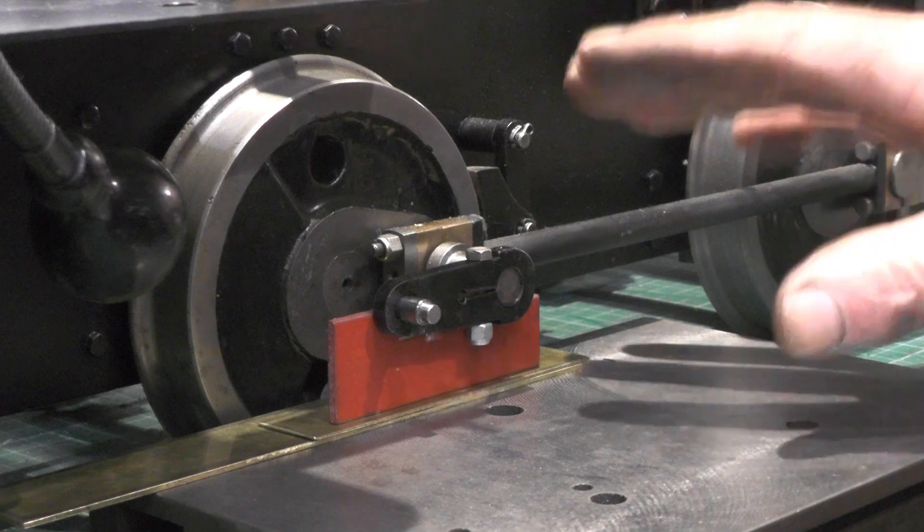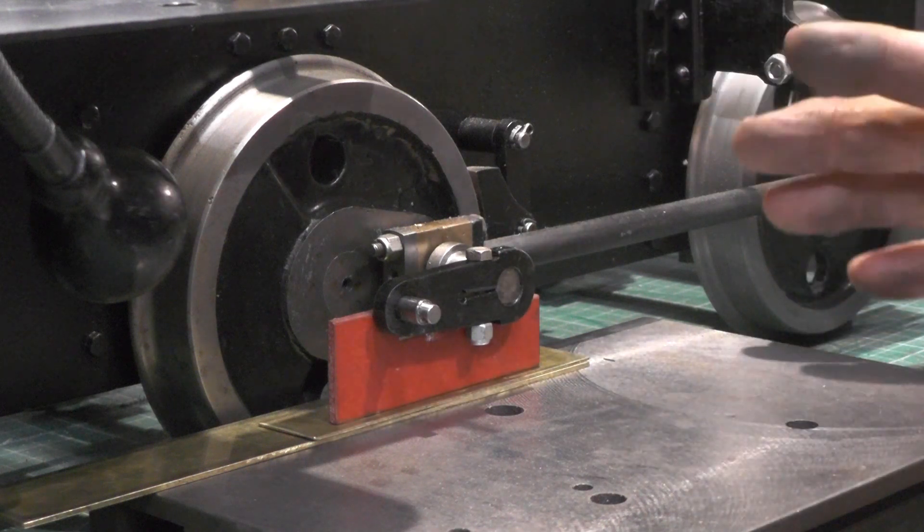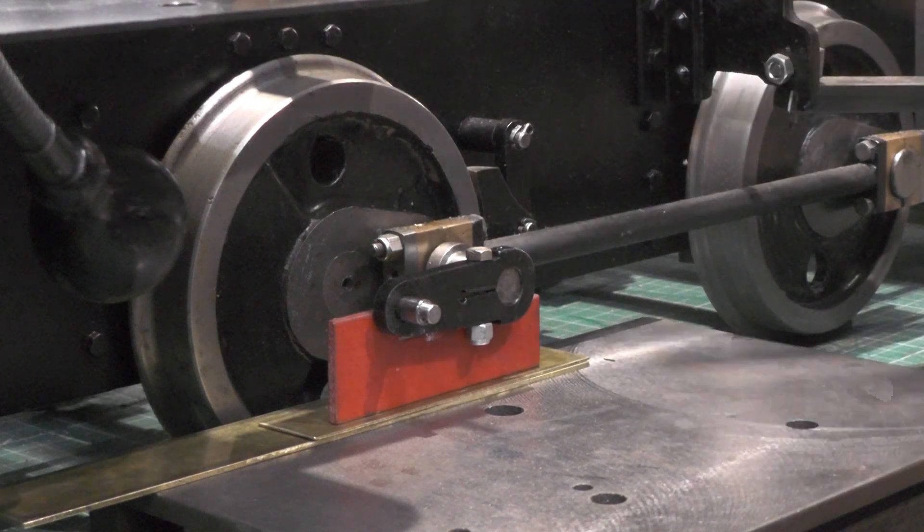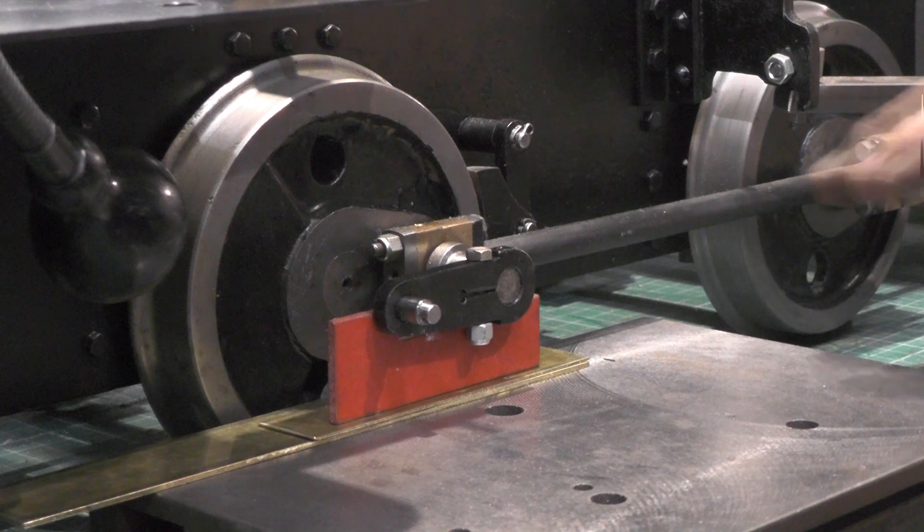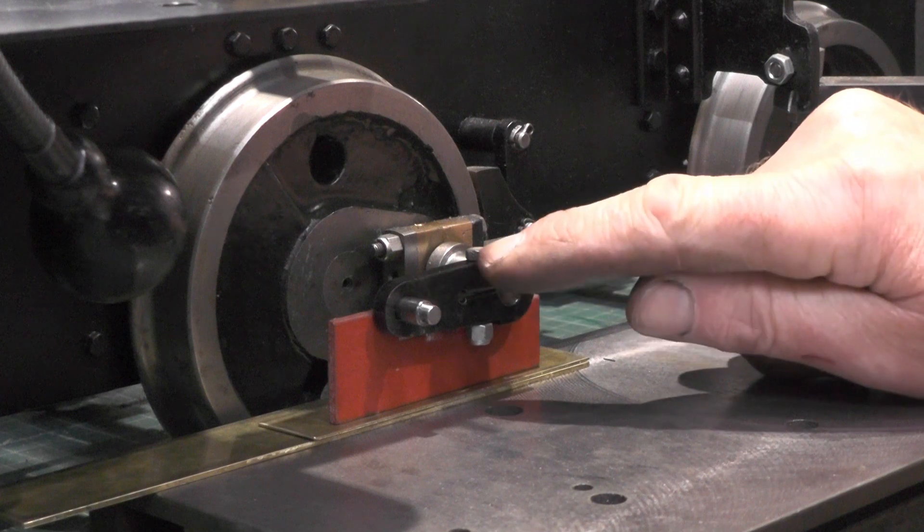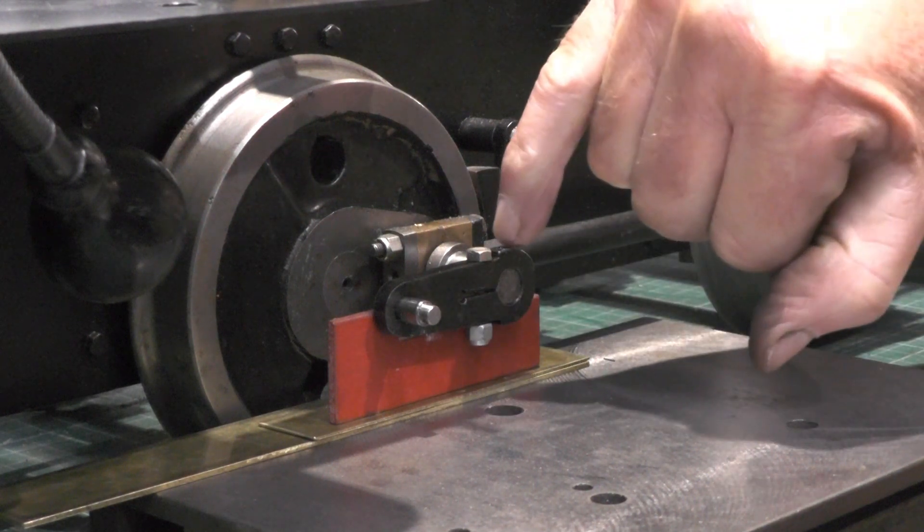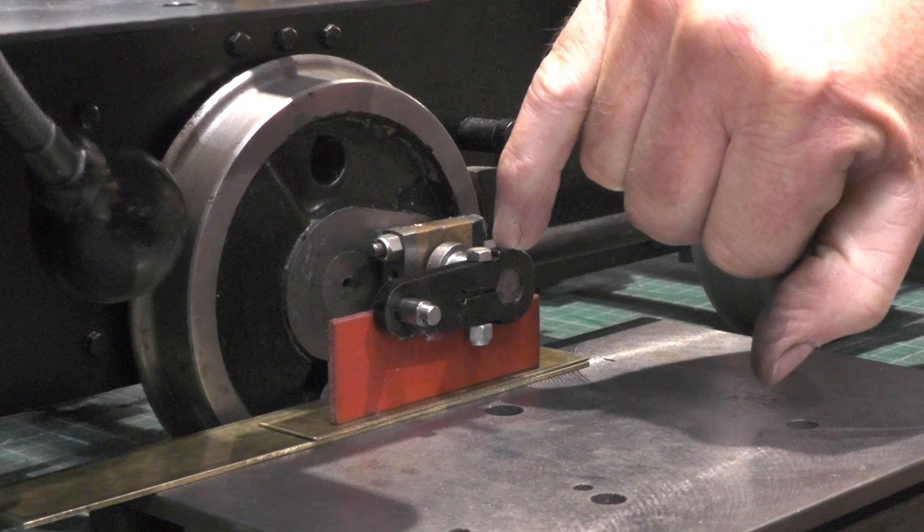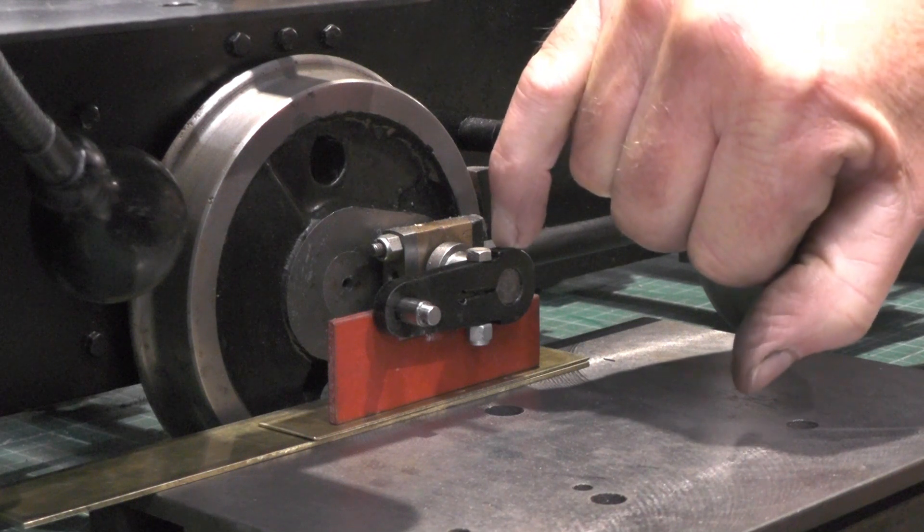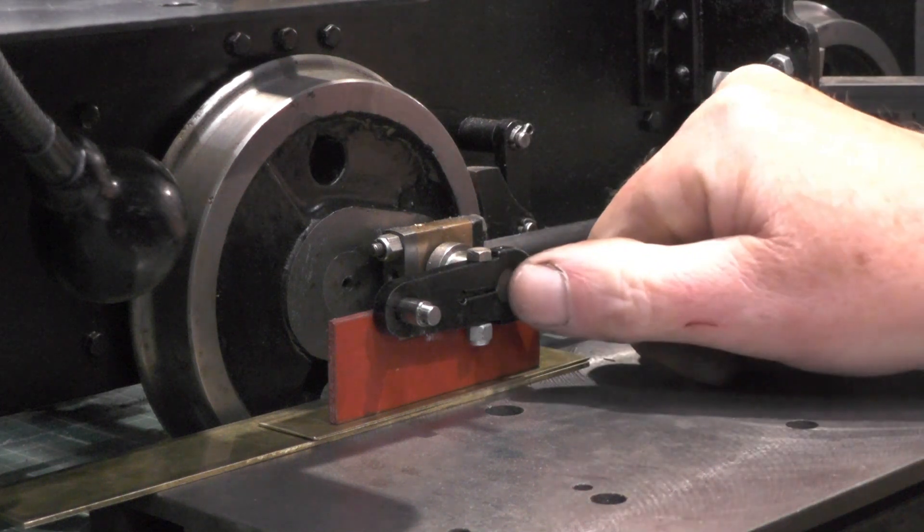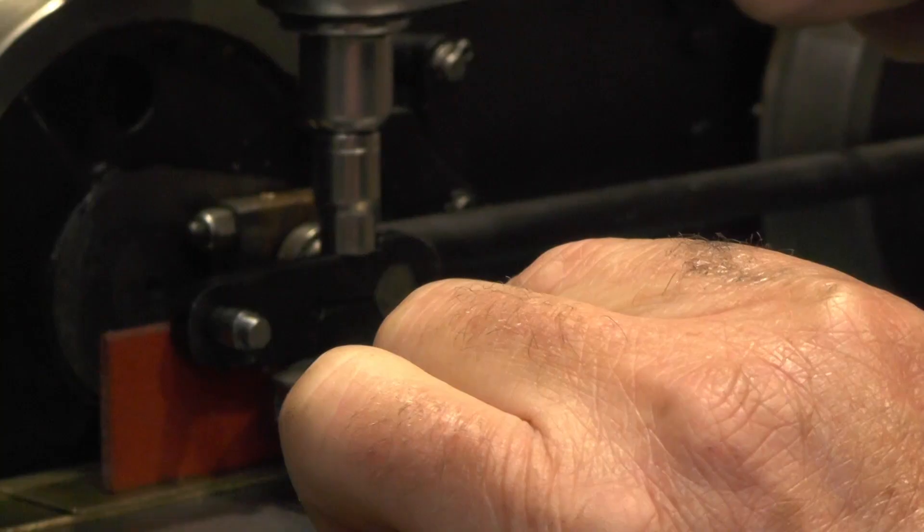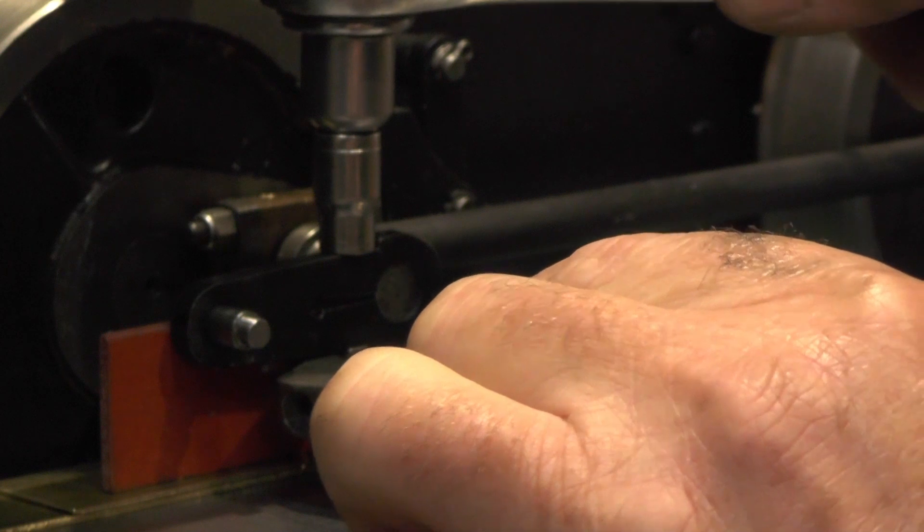Then because the wheels are quartered, they're 90 degrees out of phase. So on the other side, you do the exact same thing, but obviously they're 90 degrees out. Once I get this clamped up, I can then drill for a pin, a selloc pin or a roll pin, straight through the axle once I know my position. Then you start building it up.